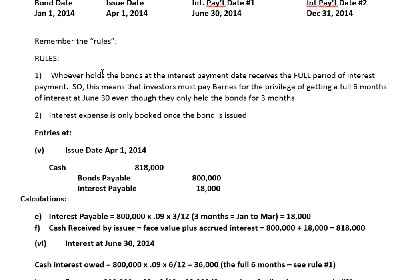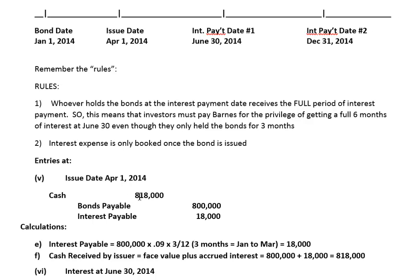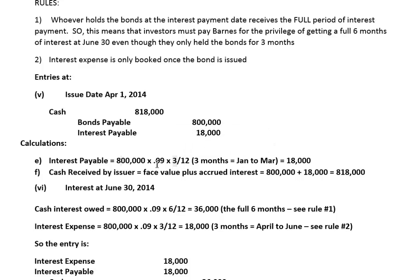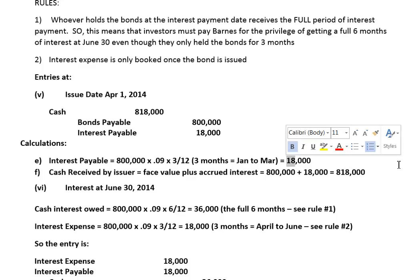When we book our interest expense, using our timeline, we know the investors are going to give Barnes $818,000 in cash. Where do we get that number? They've got to give us three months interest in advance — that's from January to March. So these investors give us the annual rate on $800,000 at 9%. The interest rate is always annual unless told otherwise. You take your annual rate, multiply it by the face value, and multiply it by three months from the bond date to the issue date. That means these investors are giving Barnes $18,000 up front, in addition to the face value of $800,000. That's how we get $818,000.